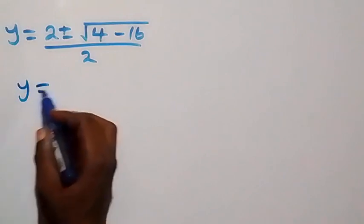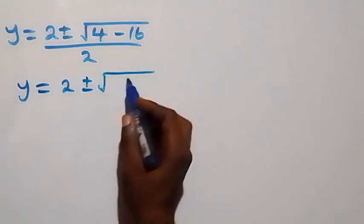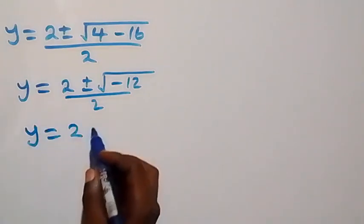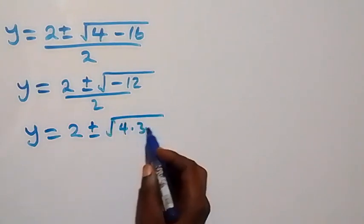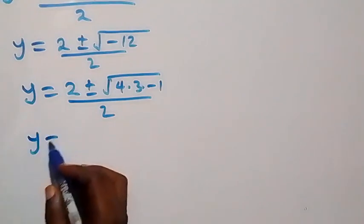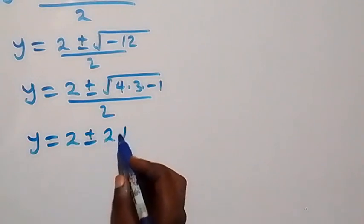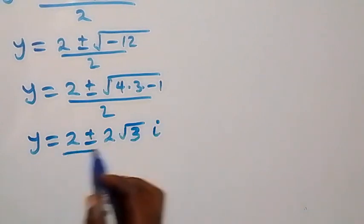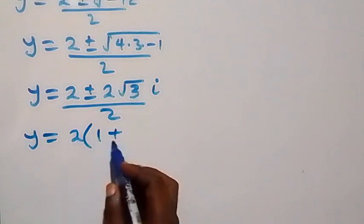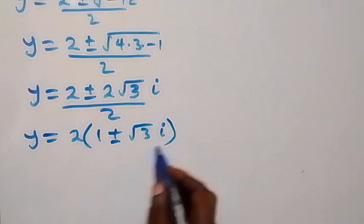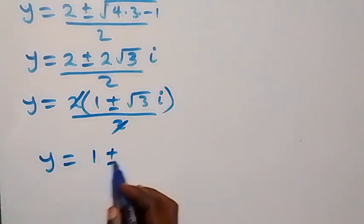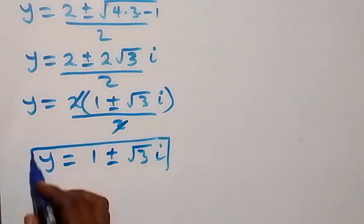From here we have y equals 2 plus or minus square root of 4 times 3 times minus 1, over 2. Separating this, square root of 4 is 2, so y equals 2 plus or minus 2 times root 3 times root minus 1, which is i, over 2. Since 2 is common, y equals 1 plus or minus root 3 i.